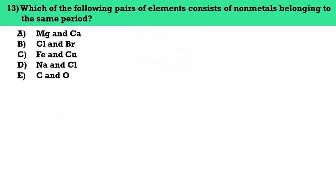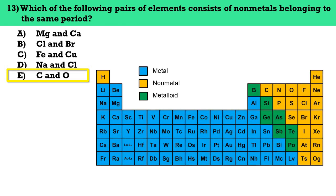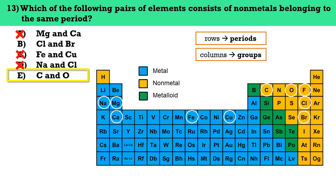Number thirteen, which of the following pairs of elements consists of non-metals belonging to the same period? The answer here is letter E, carbon and oxygen. Elements to the left of the metalloids are metals, while those to the right are non-metals. We eliminate letters A, C, and D because they include at least one metal. In the periodic table, rows indicate periods and columns indicate groups. Letter B is incorrect because Cl and Br belong to the same group. Letter E is correct because carbon and oxygen belong to the same period.